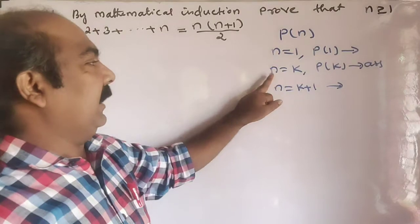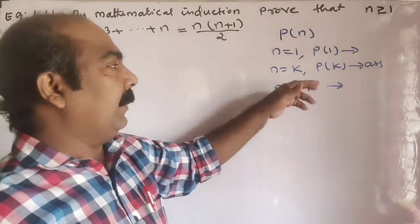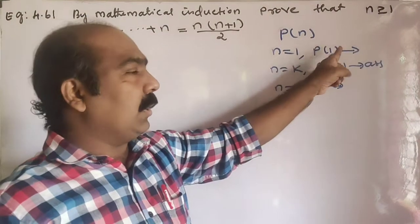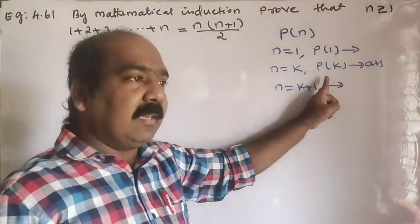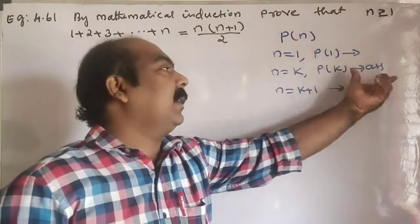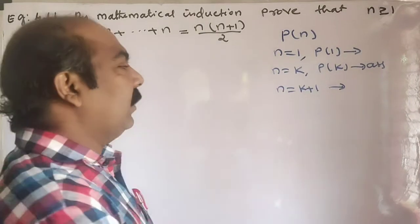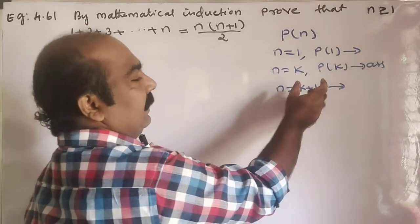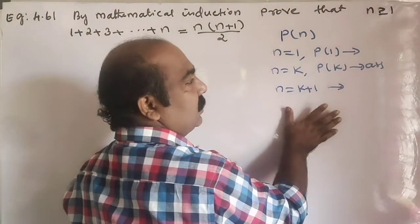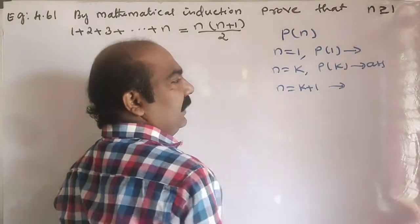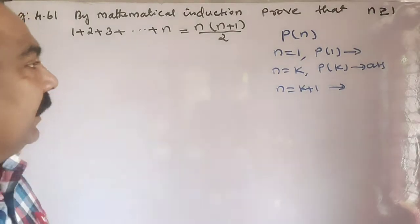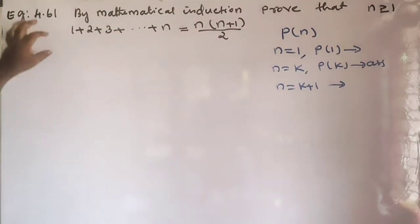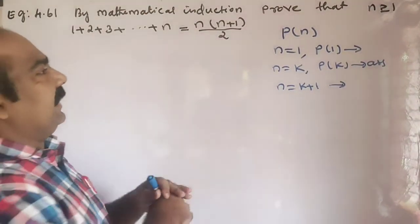The three categories are: first, P(n) is true; second, P(n) is true and we assume; third, k plus 1 — this is the concept.